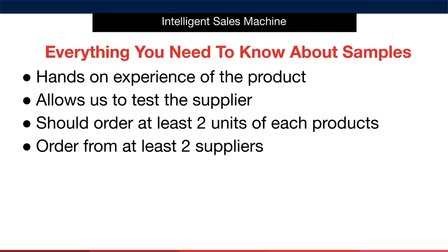Sampling allows us to test the supplier too. It's always good to do this early on to get an indication as to the quality of your supplier's operating systems as well as seeing how they operate when it comes to payment and communication. When you're ordering, make certain that you order at least two units of each product. Because we want to be able to test one unit against another — it helps us see if the items are of consistent quality and operate consistently as well. Not only do we want to order two units of each product, we actually want to order two units from at least two suppliers.